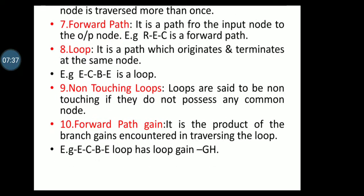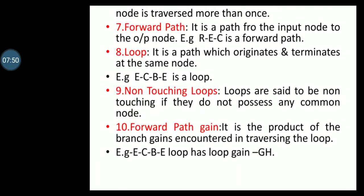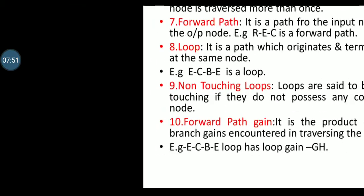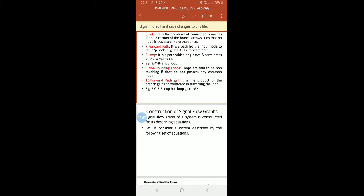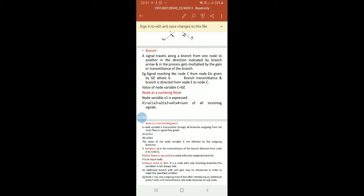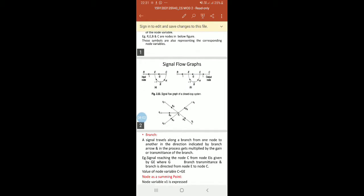Loop: it is a path which originates and terminates at the same node. For example, E-C-B-E is a loop. You can see in this figure: E, C, B, E is a loop.